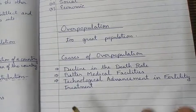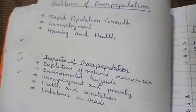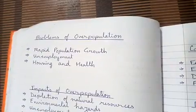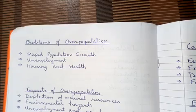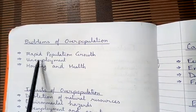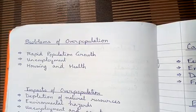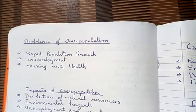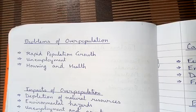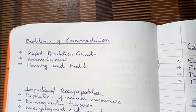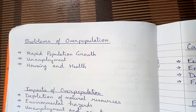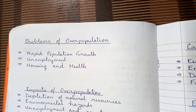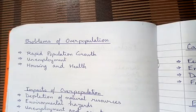Now we are going to see about the problems of overpopulation — how overpopulation is creating problems. The first problem is rapid population growth. As population increases day by day, it is creating problems in some areas and families. In underdeveloped countries like Nepal and Bangladesh, this growing population is creating a big problem.